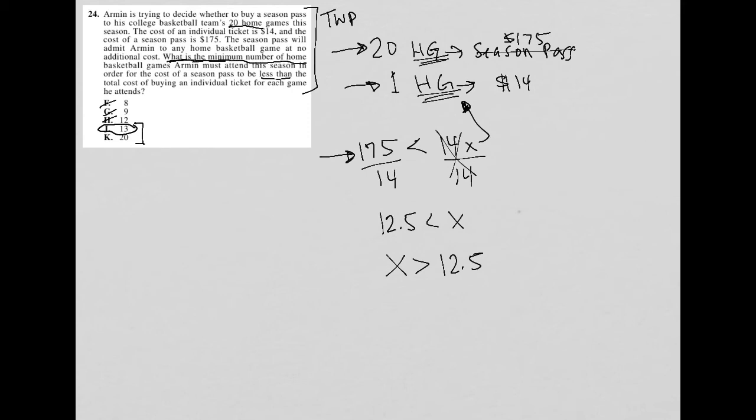Another way to solve this is by plugging in answers. This is a much more logical way, and you may prefer this way. This strategy can always be used, or 99% of the time, if the setup is a question asking for a single variable, in this case home games, and all of the answer choices represent that variable. All of these numbers represent the number of home games, so we can just plug those values in.